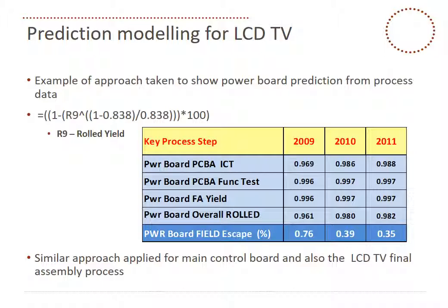You may ask where the factor 0.838 comes from — it's purely from a lot of data mining and fitting the right equation. To get to this, we tried log normal, tried log log, etc., and found this was actually the best repetitive fit with a lot of data analysis. The similar approach has been applied to the main control board and also the LCD TV final assembly process.